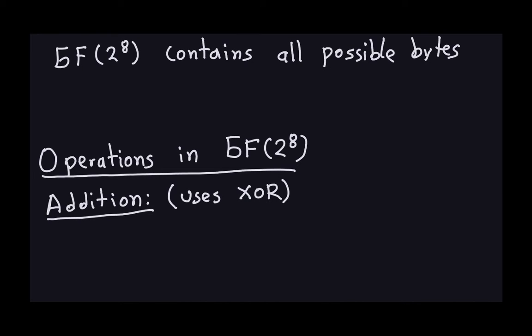Hello and welcome again. In the previous video we started talking about this collection of polynomials that we call the Galois field. We represent the elements here as polynomials, and every polynomial in this collection is also a representation of a byte — it contains all possible bytes. What we want to do now is talk about a couple of operations in this collection — addition and multiplication — because this is going to help us do the mix columns transformation needed for the Advanced Encryption Standard.